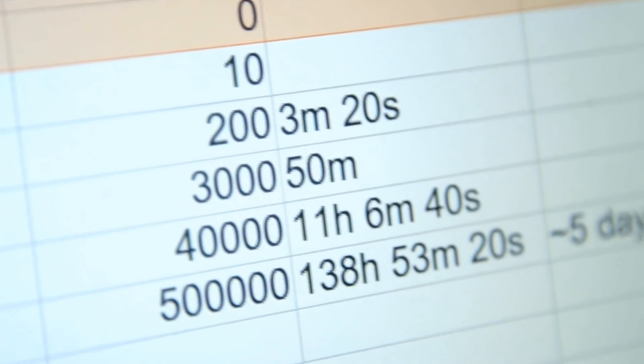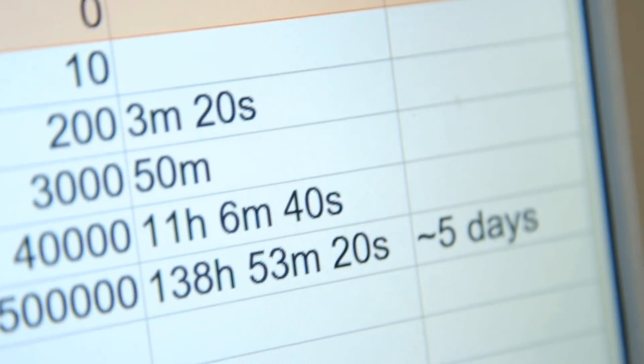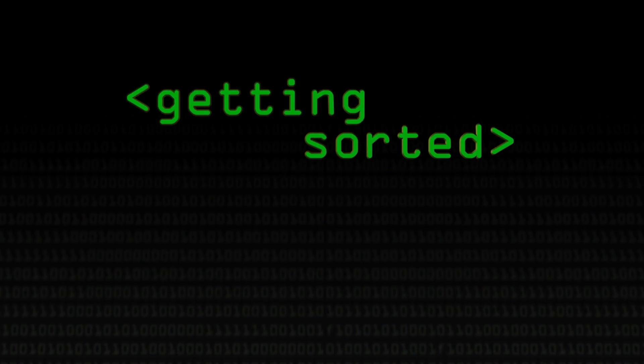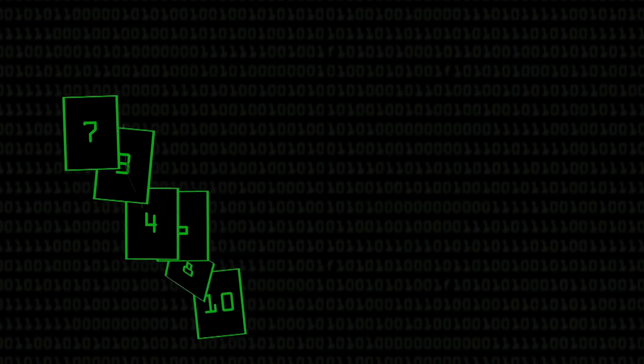Today we're going to go over some basic sorting algorithms. A simple case: you have a list of numbers and you want to sort them into numerical order. There are all sorts of reasons you'd want to do that — say you've got a spreadsheet and you want to sort one column; that uses a sorting algorithm. But there are also less obvious applications, like all sorts of artificial intelligence. If you're playing a computer game with AI, they'll definitely be using sorting to find the best way to do something.